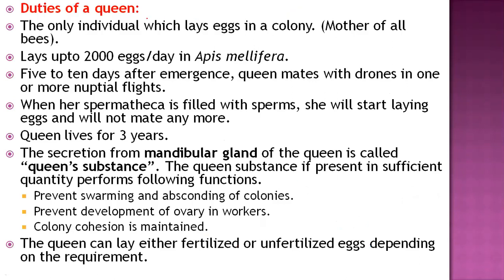Now, the important duties of the queen. The queen is one individual in each hive or comb, and her major function is to lay eggs in the colony for the further development of the next generation. That is why she is called the mother of all bees. She lays about 2,000 eggs per day in the case of Apis mellifera, and around 2,200 to 3,000 for Apis dorsata, with variation across different species.